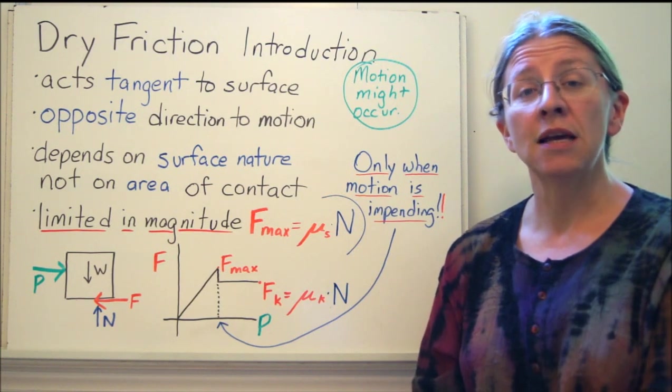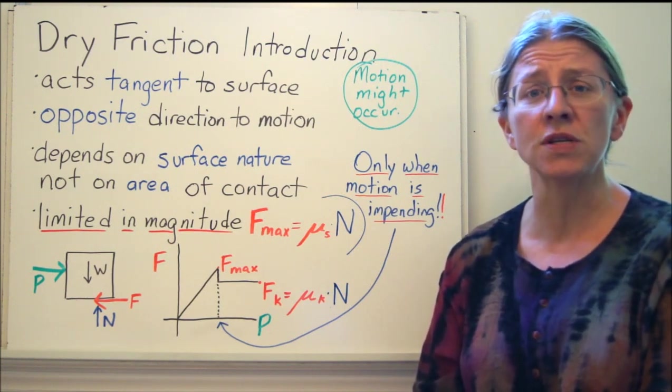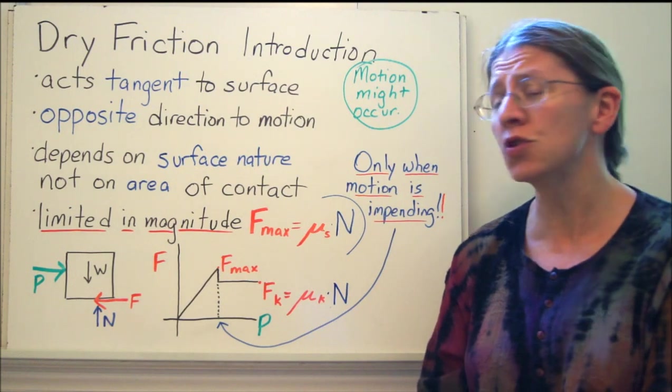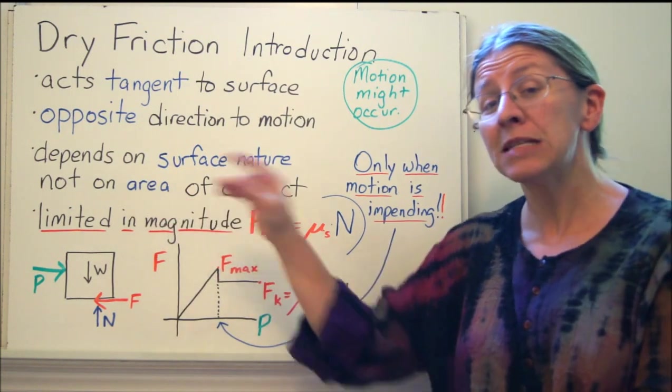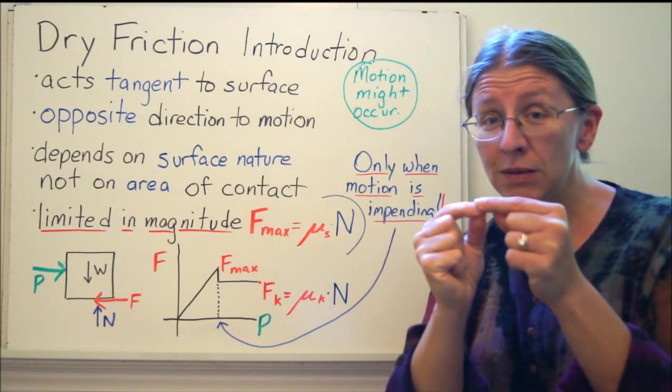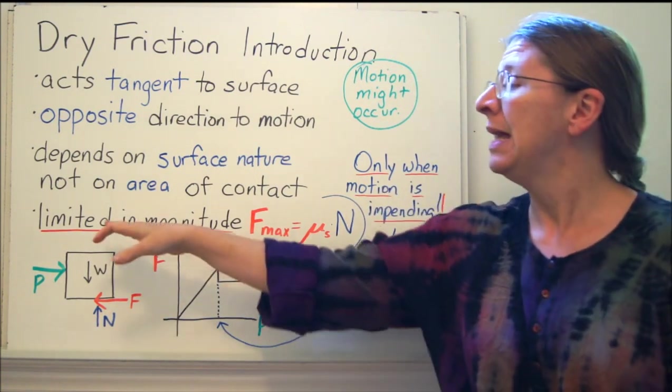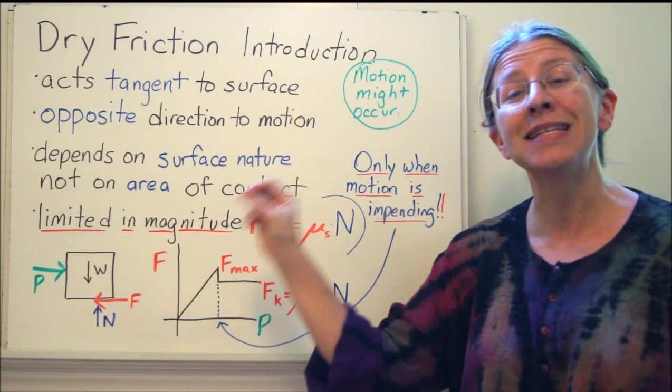Friction depends on the surface nature. So it comes from irregularities in the surface or some sort of molecular attraction between the two surfaces. It does not depend on the area of the contact. So if you have two great big things and they're touching at one tiny point or one huge surface it doesn't make any difference. The big point here is that it is limited in magnitude.